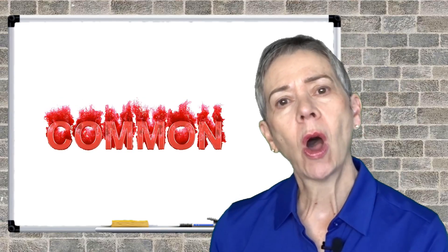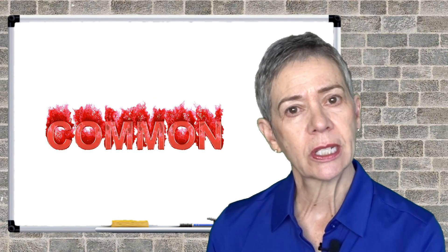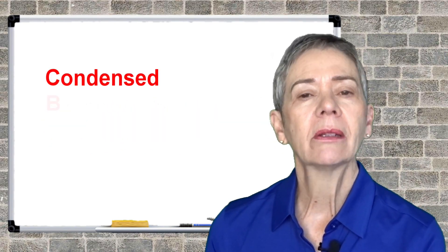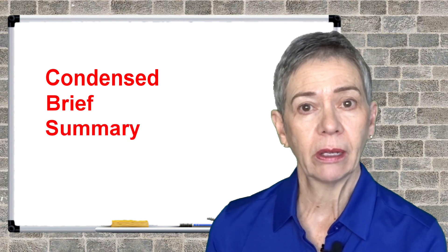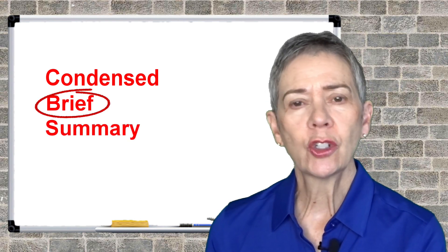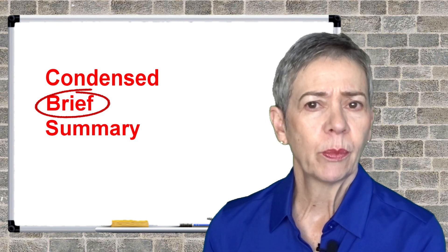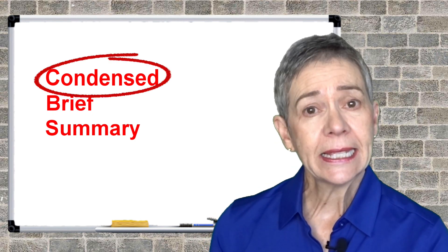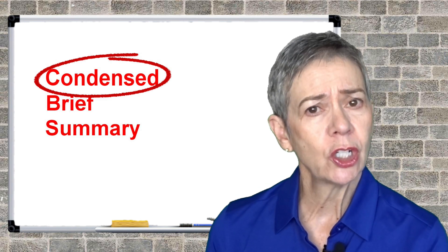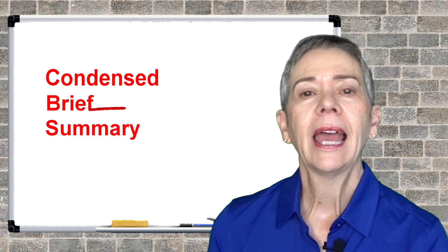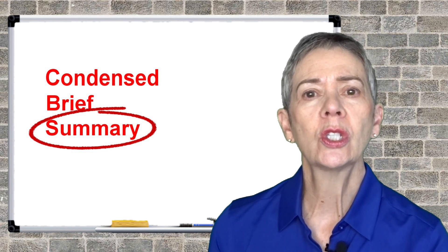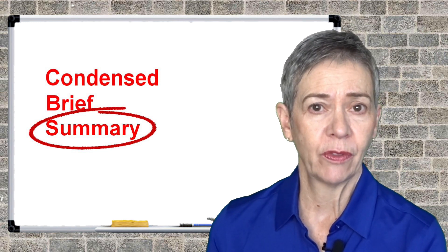What are the common elements in these two definitions? The important words are condensed, brief, and summary. Brief means short — that's somewhat imprecise. Condensed is an important word because it means reduced in size from its original. And summary means that it succinctly includes all the important points of the original.